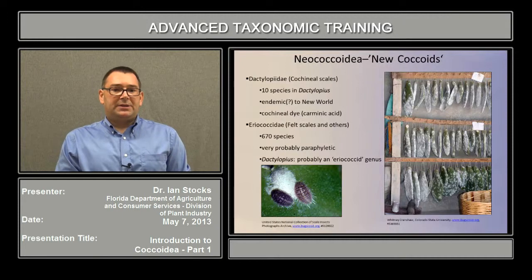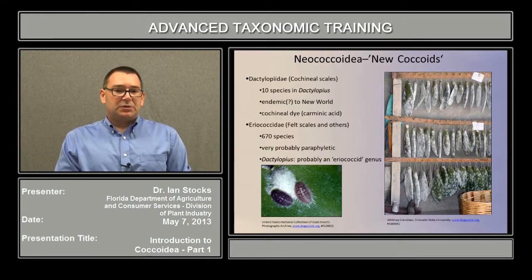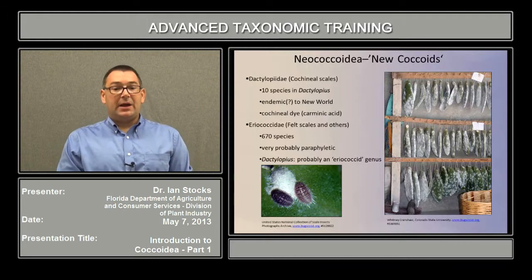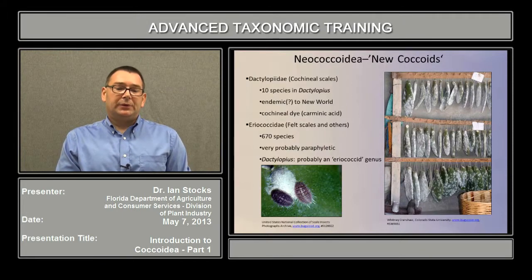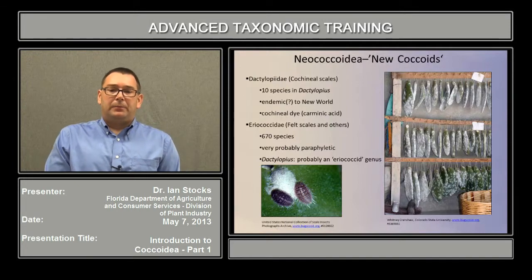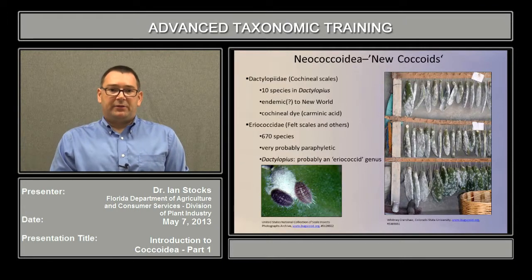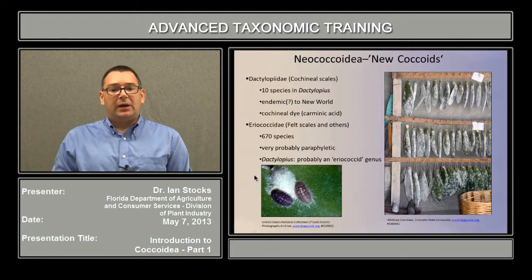Another reasonably familiar family is the Dactylopiidae, or the cochineal scales. There are ten species in the single genus Dactylopius, and it's thought that this genus is endemic to the new world. And this has been, for many years, the source of cochineal dye, which is carminic acid. The somewhat larger family are the felt scales and their allies, the Eriococcidae. There are about 670 species worldwide, and this is probably a paraphyletic group, so there are probably a number of genera included or excluded from this current concept that render it not a very natural grouping. For instance, the genus Dactylopius, mentioned above in the family Dactylopiidae, is in all probability another Eriococcidae genus.